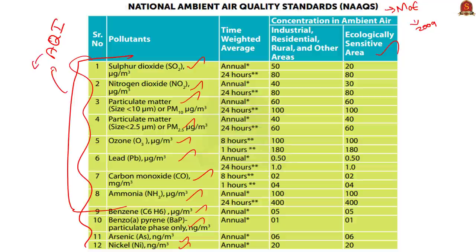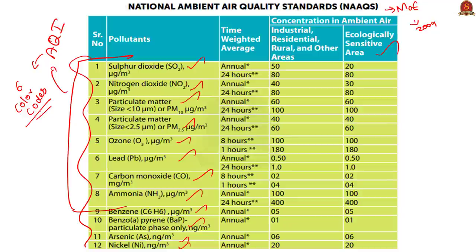The air quality index published daily uses these 8 pollutants. The air quality index has 6 categories: good, satisfactory, moderately polluted, poor, very poor, and severe. These are color-coded. In the Hindu newspaper, under the weather watch section, important cities like Chennai, Bangalore, Delhi, and Hyderabad have their color code regarding pollution level provided daily, based on the air quality index — which only uses the 8 pollutants, not all 12.